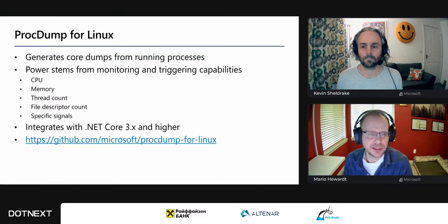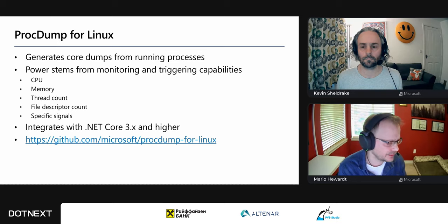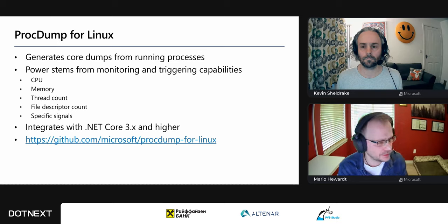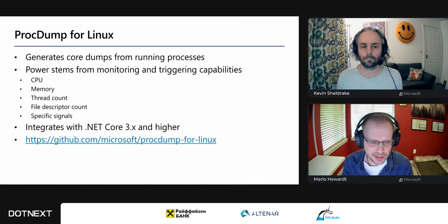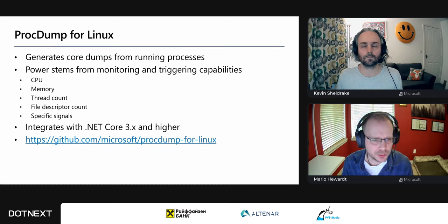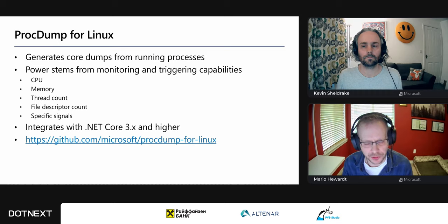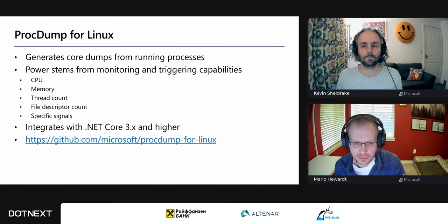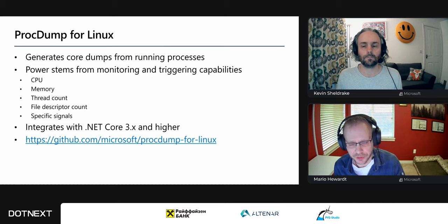Procdump is essentially a way of generating static process snapshots — called core dumps on Linux. We already have mechanisms to generate core dumps on Linux, but the power of procdump comes from the ability to monitor processes and specify triggers. When a trigger hits, it automatically generates a core dump — a really powerful mechanism when looking at problems that aren't easily reproducible and that happen sporadically in production.